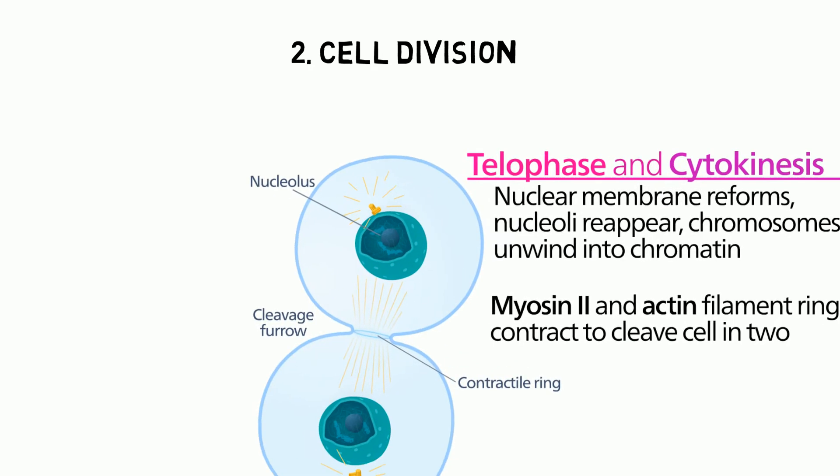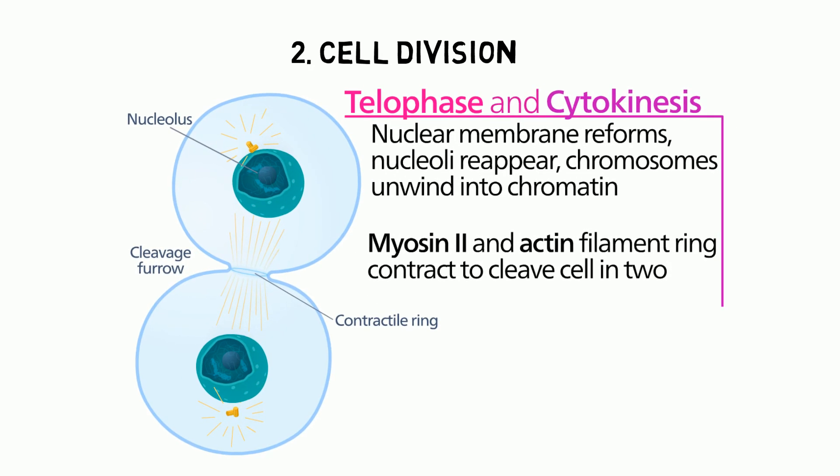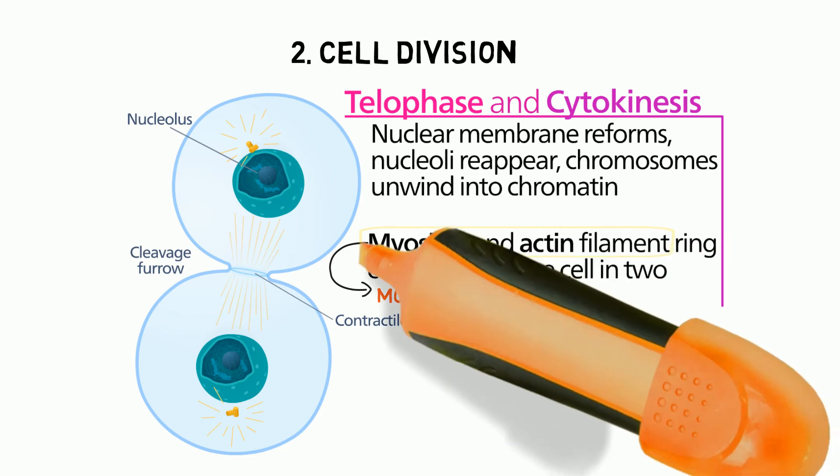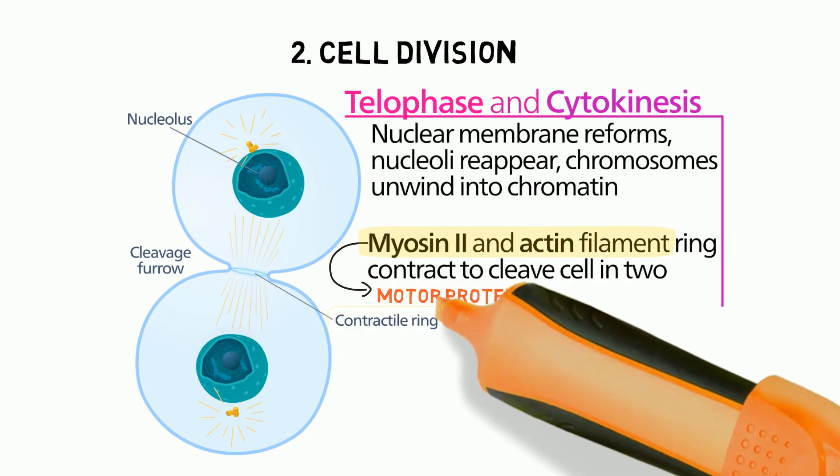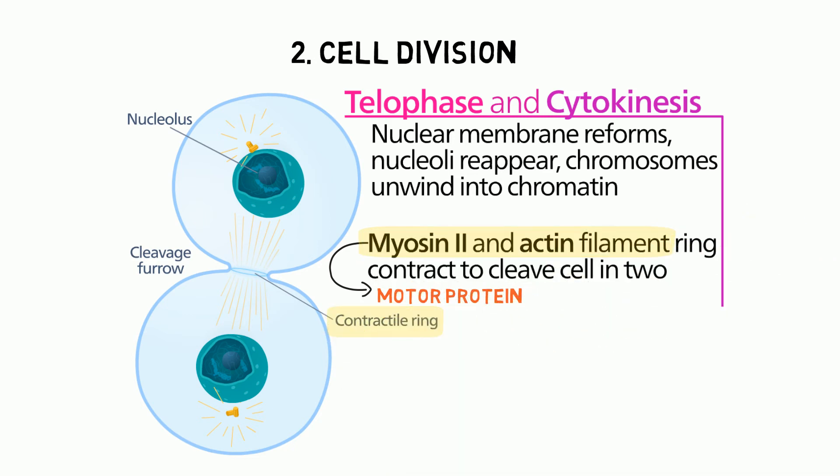Towards the end of mitosis, the process of cytokinesis divides a cell into two. In the same way that microtubules associate with motorprotein dynein in flagella to create movement, microfilaments associate with a motorprotein known as myosin-2 to form a contractile ring during cytokinesis.